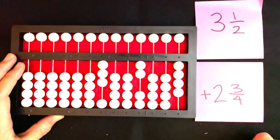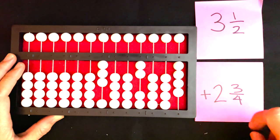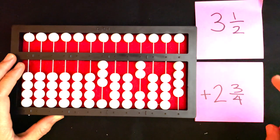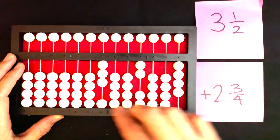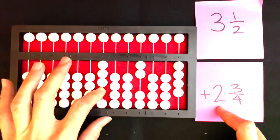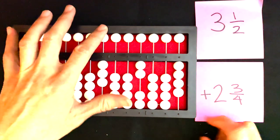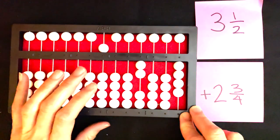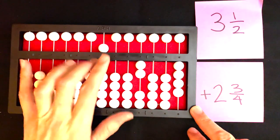Now I can perform my addition because I have three and two-fourths plus two and three-fourths. I'm going to start by adding my whole number, which is two. I can't add it directly, so I'm going to add five and clear three. So I get five as my whole number.